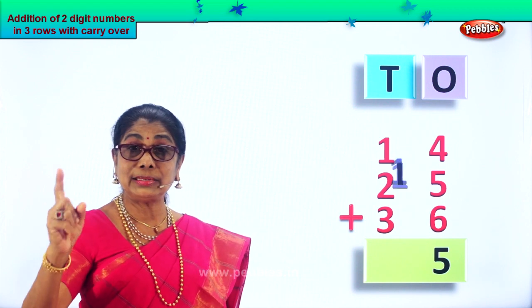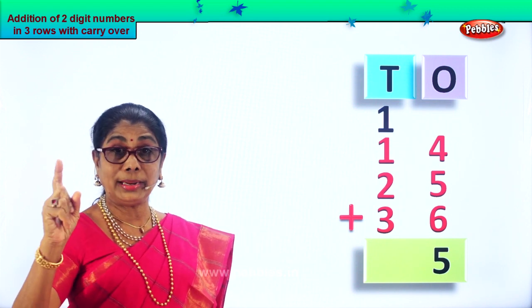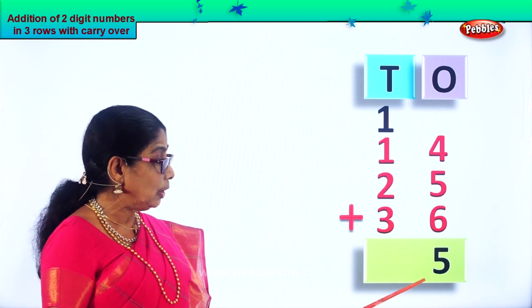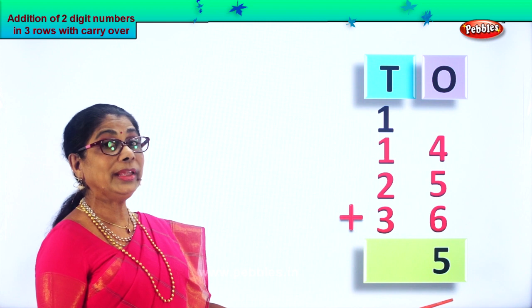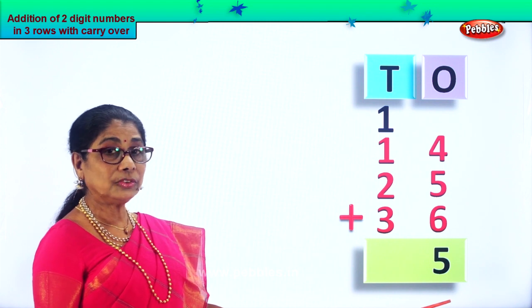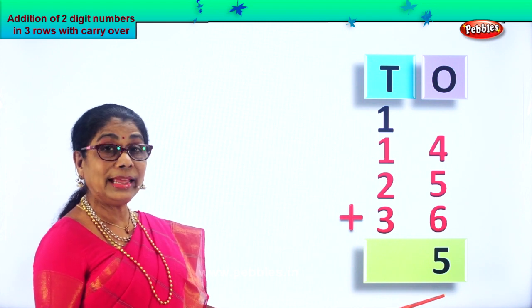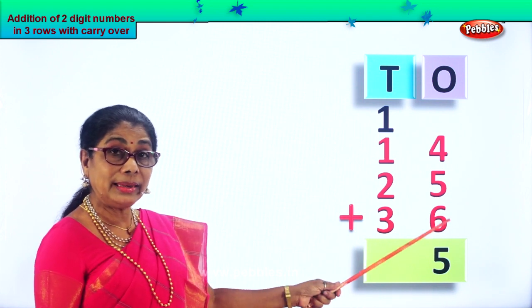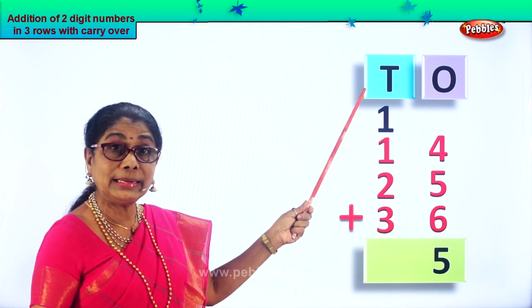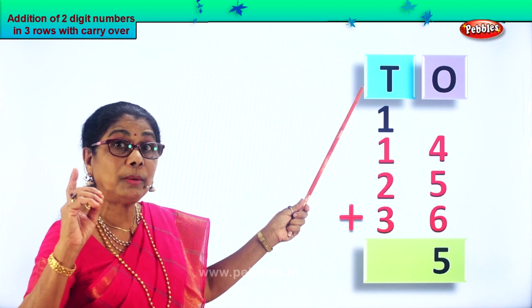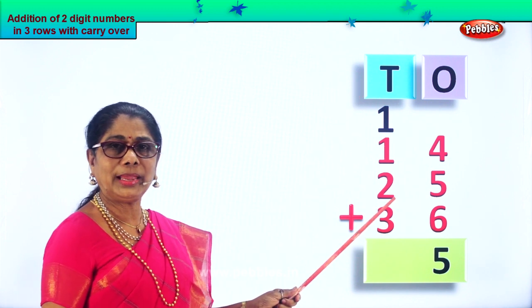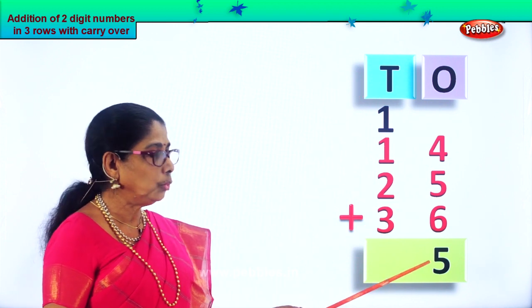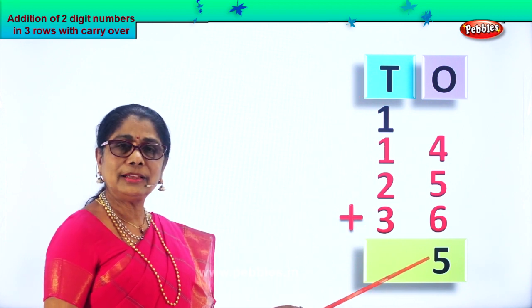Ten ones is equal to one ten. So we carry the ten ones and put it in the tens place — it becomes one ten. You cannot put two digits in one place.